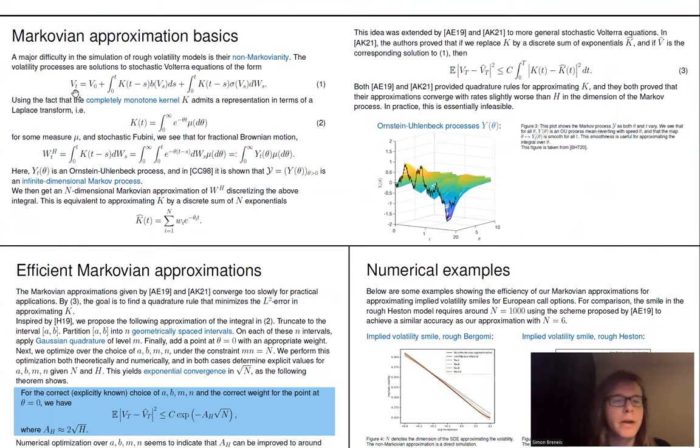So what we do is we consider Markovian approximations of such rough volatility models. So let us first take a step back and consider such stochastic Volterra equations as is written down here. So K is still the fractional kernel from before, and now we have two general functions b and sigma here. They should be Lipschitz continuous linear growth, but otherwise they can be essentially arbitrary. Now, the kernel K, the fractional kernel K, is actually completely monotone. So it has a representation in terms of a Laplace transform. It's here where mu is some positive measure that we know explicitly.